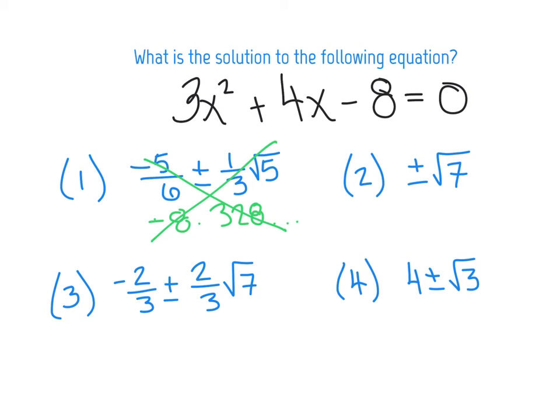Okay, next thing I'm going to do is plug in positive radical seven. Okay, and storing that as x. And then I'm just going to retype 3x squared plus 4x minus eight. And this time I got 23.583. Again, that's not zero, so this is not the correct answer.